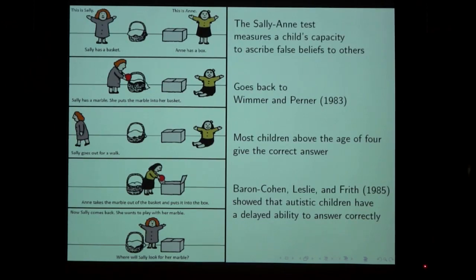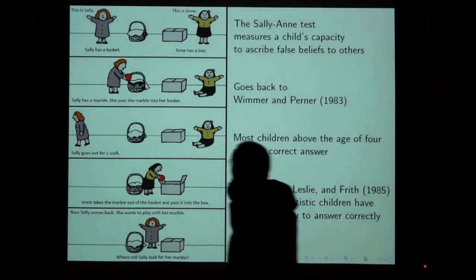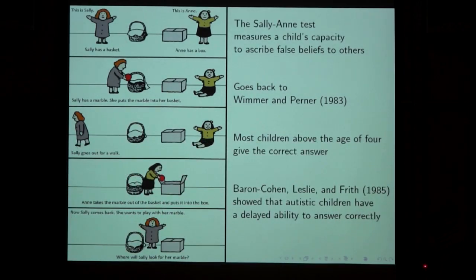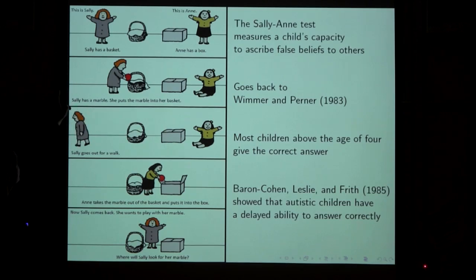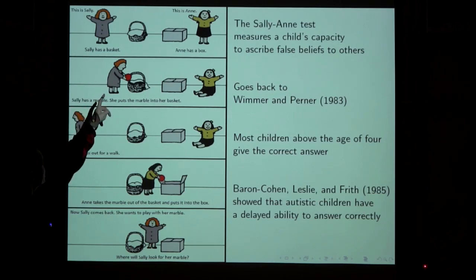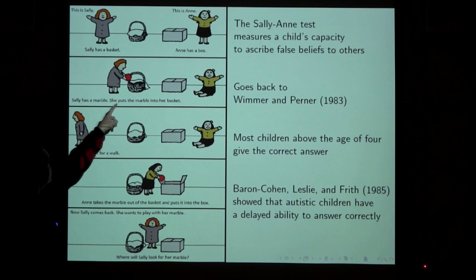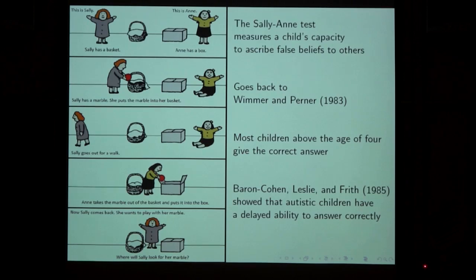Here's the Sally-Ann test. A child is presented with a cartoon. In the first scene there are two dolls: Sally, the girl to the left, has a basket, and the other one, Ann, has a box. Then Sally has a marble, puts it into the basket, and then she leaves for a while — she leaves the room and can't see what is going on. During her absence, the other girl Ann moves the marble from the basket to the box. Then Sally comes back and the question is: where will Sally look for her marble?